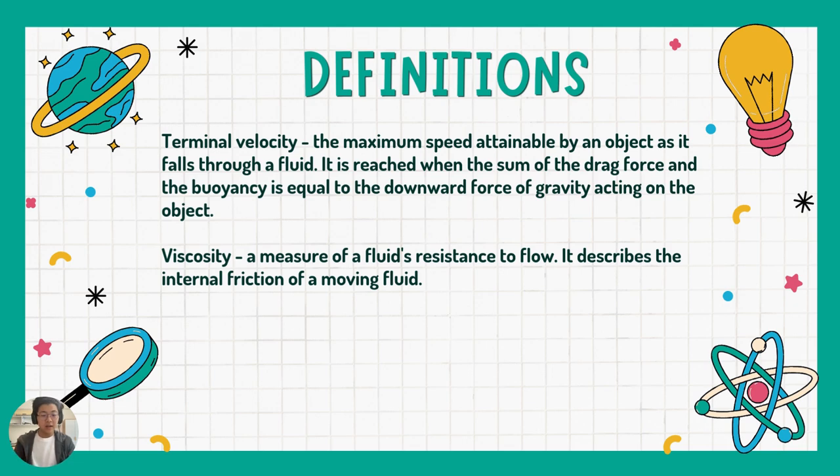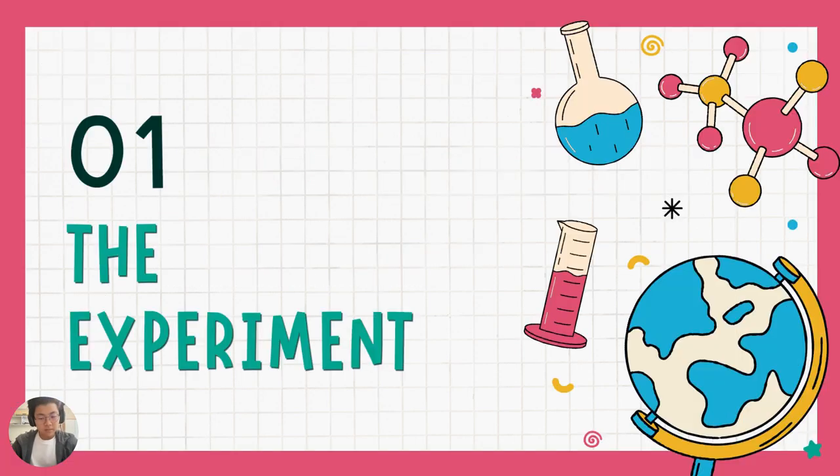Besides that, viscosity means the measure of a fluid's resistance to flow. It describes the internal friction of a moving fluid. For example, when you drop an object in water, it passes through it easily, but when you drop it in honey, it is more resistant to the object flowing through it.